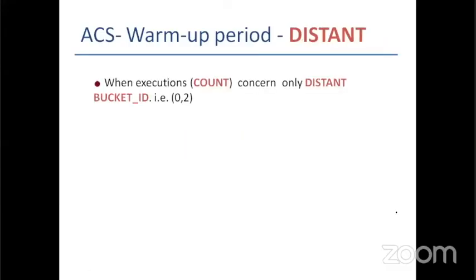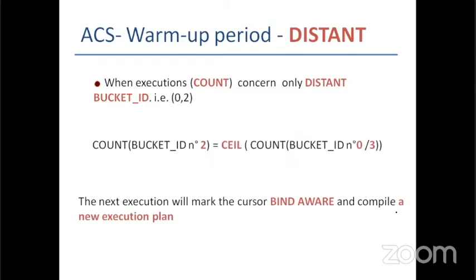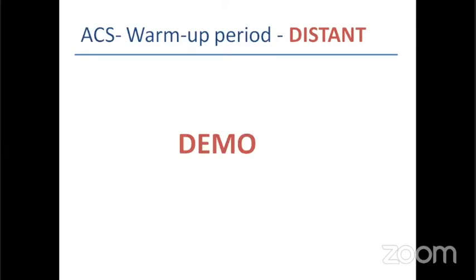What about the second case — when executions are done at distant buckets, meaning 0 and 2? The rule is also simple: when the number of executions done at bucket ID 2 equals the count of executions done at bucket ID 0 divided by 3, then the next execution will mark the cursor bind aware and compile a new execution plan.